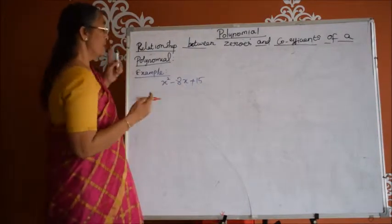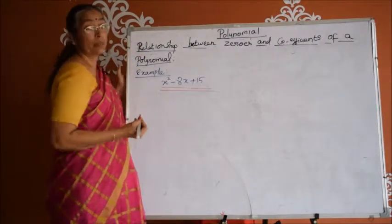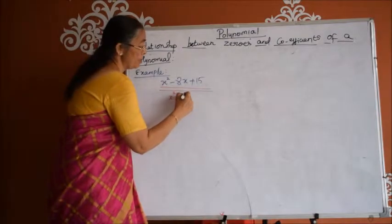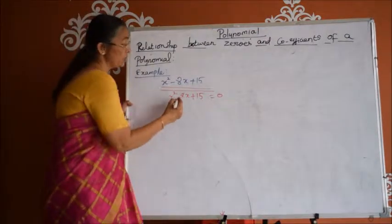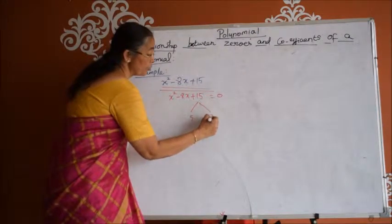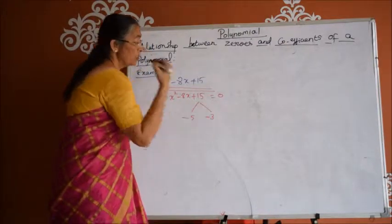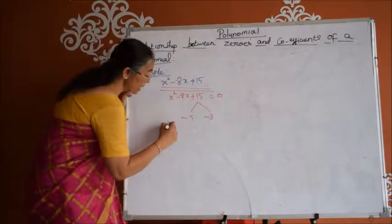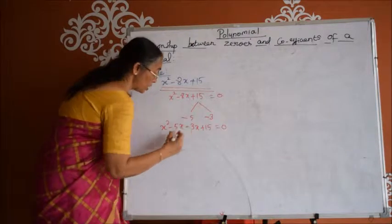First we find the zeros of this polynomial by the method of factorization. So x squared minus 8x plus 15 should become 0 for values of x. Factors of 15 are 5 and 3. Now since minus 8 is there, we use minus 5 and minus 3. So by splitting the middle term: x squared minus 5x minus 3x plus 15 is equal to 0.